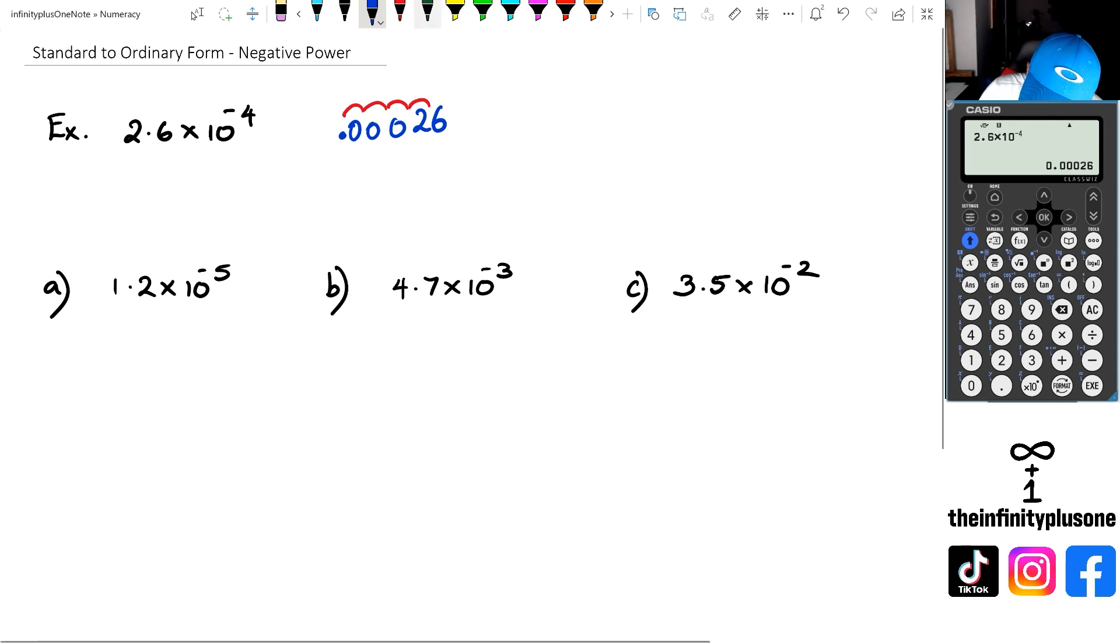So looking at question a), I've got 1.2, so I'm going to write down 12. And what I'm doing is I've got negative 5, so I need to move this one, two, three, four, and five. So then I've got two, three, four zeros underneath it. So my final answer is going to be 0.00012.